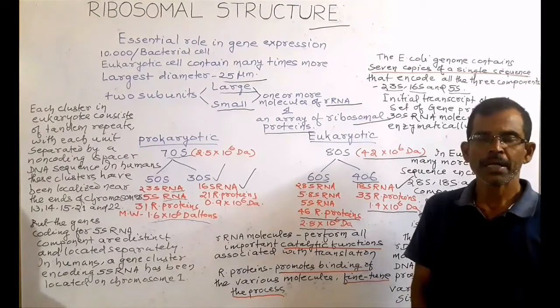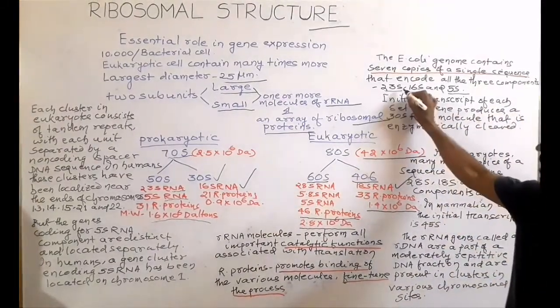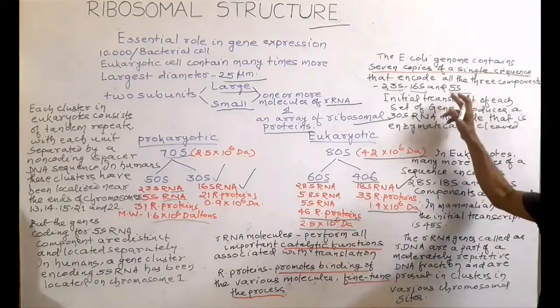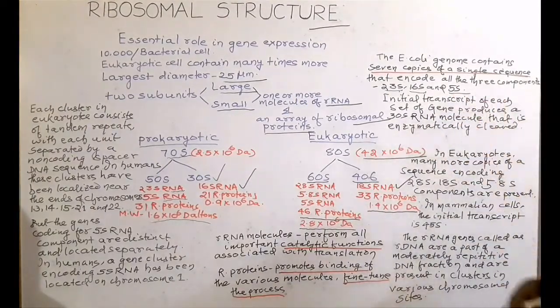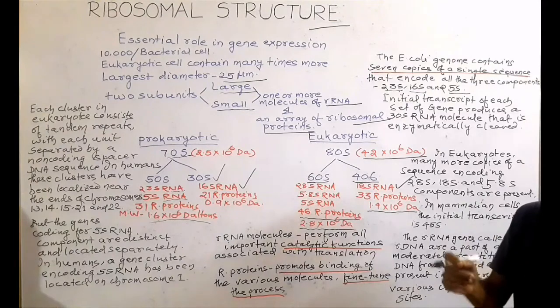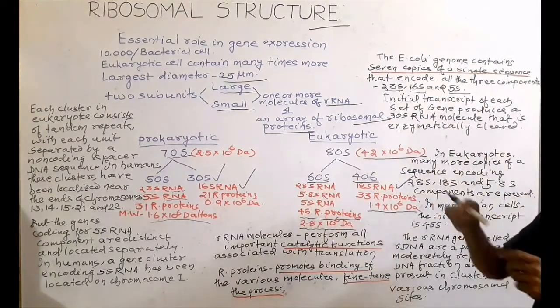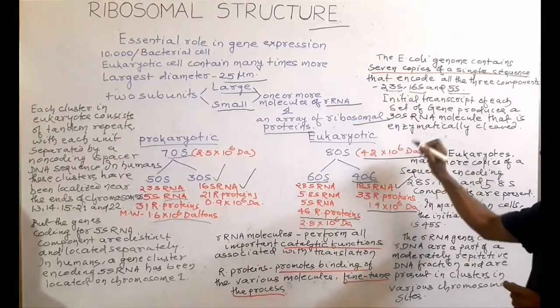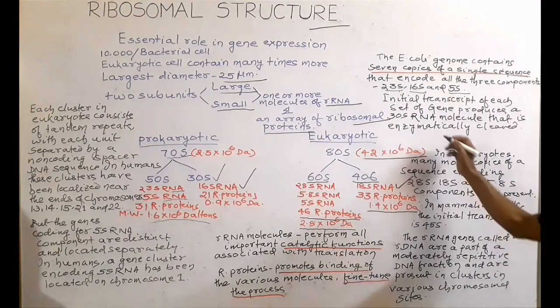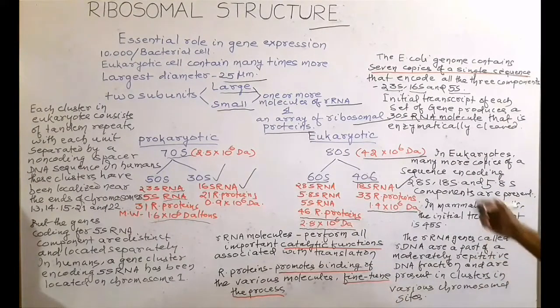The E. coli genome contains 7 copies of a single sequence which encode all three rRNA components: 23S RNA, 16S RNA, and 5S RNA. The initial transcript of each set of genes produces a 30S RNA molecule which is cleaved enzymatically to produce these three types of ribosomal RNA.